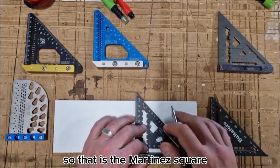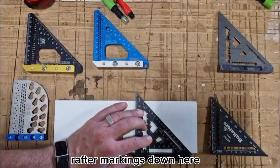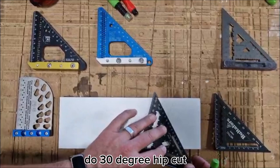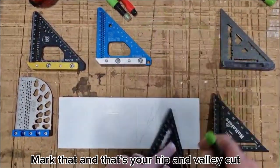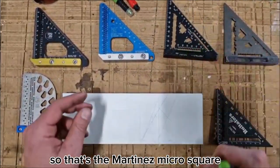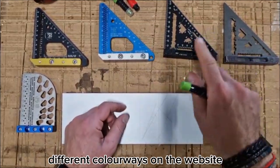The last feature on the Martinez square is the hip value rafter markings down here. Using that, if you want to do a 30 degree hip cut, you can just put that straight to 30, mark that, and that's your hip and valley cut. The Martinez micro square is also available in more different color ways on the website.